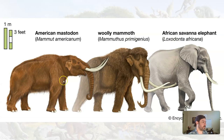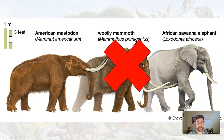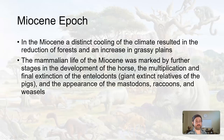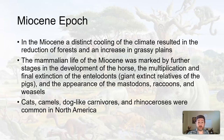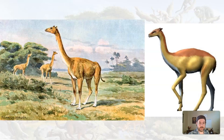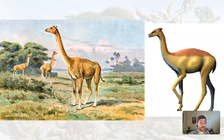In the Miocene we start to get the evolution of the American mastodon. Now there's a difference between a mastodon and a woolly mammoth — they're not around North America yet, we'll talk about that later. Cats, camels, dog-like carnivores, and rhinoceri were also common in North America. These are images of early camels — they don't quite yet have their distinctive evolutionary hump. It's like a llama-giraffe kind of hybrid, and you can see how these things are related and where they may have come from.